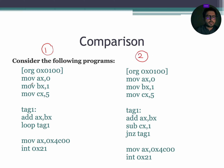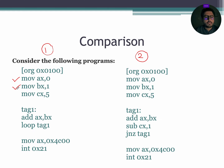Let's first discuss program number 1. In program number 1, the first instruction is MOV AX, 0 — it means that AX will become 0000. Next instruction is MOV BX, 1, so BX will become 0001. The third instruction is MOV CX, 5, so this will update CX to 0005.